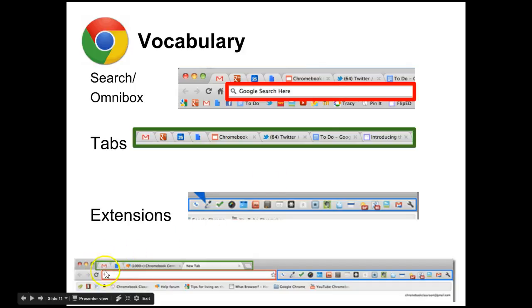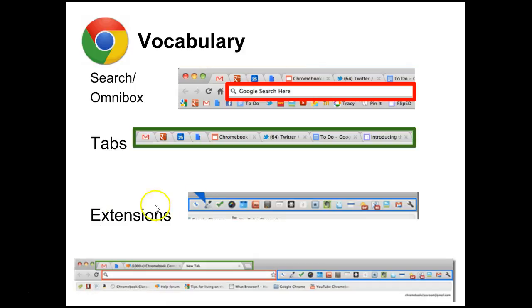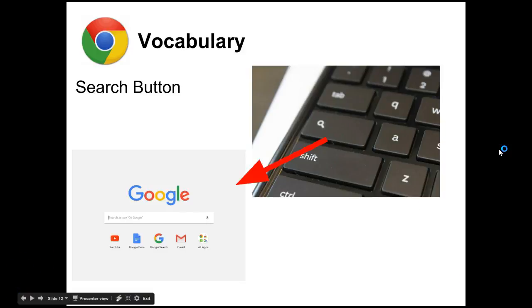Across the top you have your tabs, which haven't changed — they're just separate browser tabs just like on a regular laptop. Over to the side of the address bar, highlighted in blue, you have your extensions. Extensions are small programs that you can add to your browser to add functionality, giving it a little extra capability. Also on the Chromebook keyboard there is a button with a magnifying glass that will launch a search box or your app launcher.